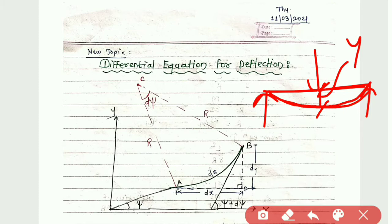This distance we have considered the deflection — that is the vertical distance between the original axis and the elastic curve. And this is theta when we draw the tangent at A or at B. This term is known as theta or dy/dx, that is the slope. We have already seen the boundary conditions for slope and deflection.